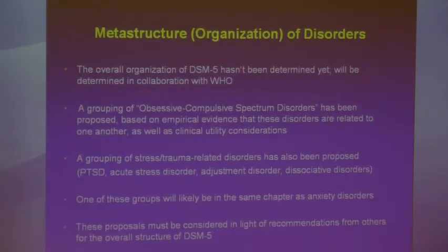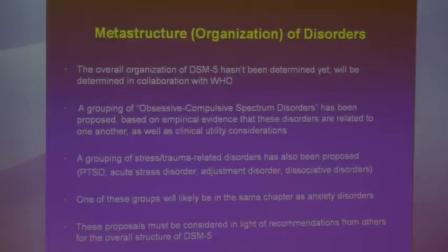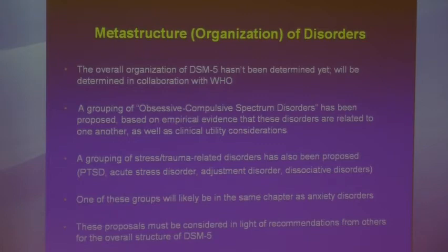Regarding the meta-structure — how disorders are organized — the overall organization of DSM-5 has not been decided yet and will be determined in collaboration with WHO. The work group has proposed a grouping of obsessive-compulsive spectrum disorders, based on empirical evidence that these disorders are related to one another as well as clinical utility considerations. Disorders would come from all over DSM, currently scattered in different areas. The OC spectrum disorder concept has been around for several decades, and literature reviews have been published looking at many external validators on the relatedness of these disorders.